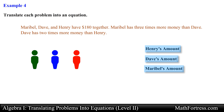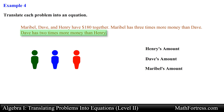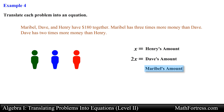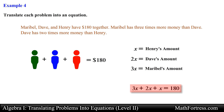Once we have determined the unknown quantities we are ready to assign variables. We know Maribel has three times more money than Dave, and Dave has two times more money than Henry, but we have no information about how Henry's amount relates to the others. So we assign the variable x to Henry's amount. This means Dave's amount is represented as 2x, and Maribel's amount as 3x. Since all three amounts add up to 180 dollars, our equation is: 3x plus 2x plus x equals 180.